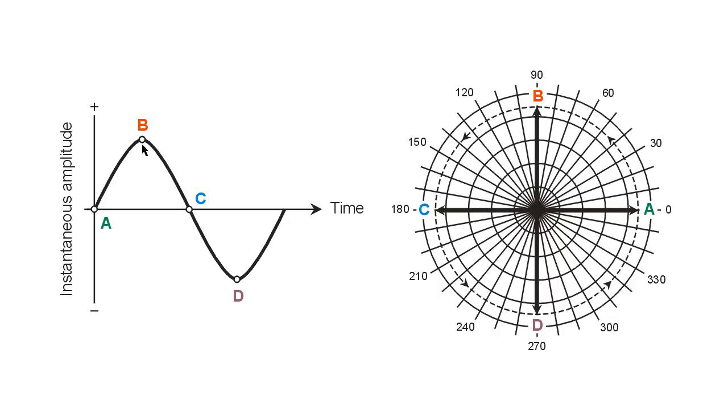That instantaneous amplitude right there is what determines the length of the vector. The frequency of this wave, how fast it alternates, determines how fast this vector goes around and around.